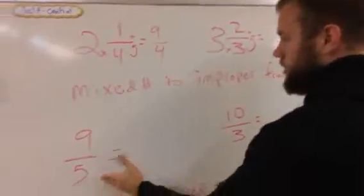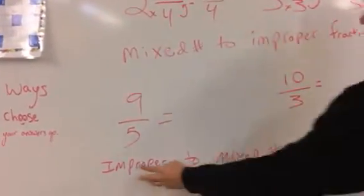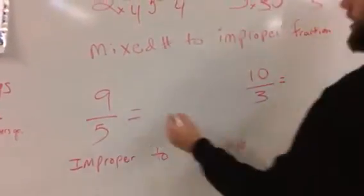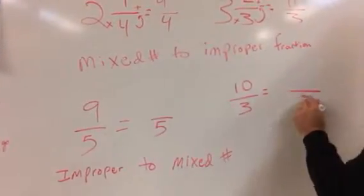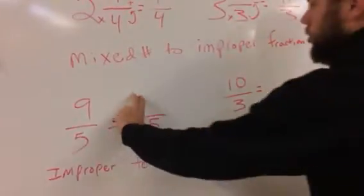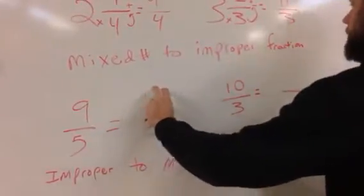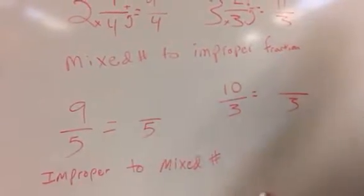Let's go backwards here. Let's go improper fraction to mixed number. Again, what's the first thing we're going to do? Realize that the bottom number is always going to stay the same. We do know a whole number is going to go here and a fraction is going to go here. This is the remainder.